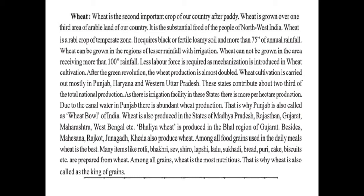Less labour force is required as mechanization has been introduced in wheat cultivation. After the Green Revolution, wheat production is almost double. Wheat cultivation is carried out mostly in Punjab, Haryana and western Uttar Pradesh, which contribute about two thirds of the total national production. Due to canal water irrigation in Punjab, there is abundant wheat production, which is why Punjab is called the wheat bowl of India.